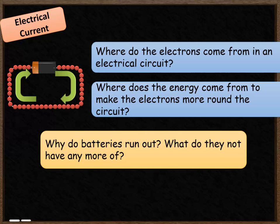Here are some questions I'd like you to have a think about. So pause the video and then I'll talk you through the answers. So the first question, where do the electrons come from in an electrical circuit? The electrons are already located in the wire of the electrical circuit, from the metallic bonds holding the wire together.